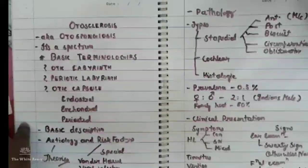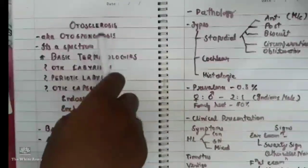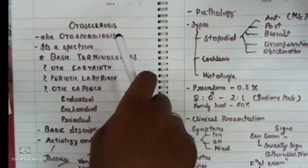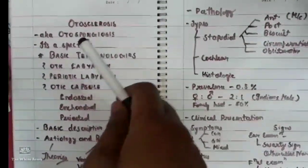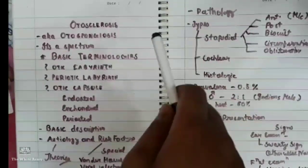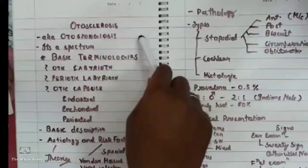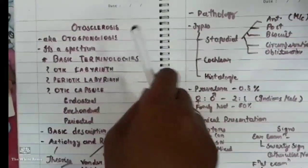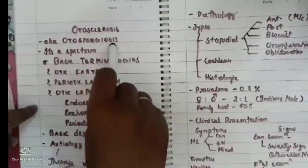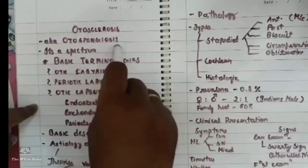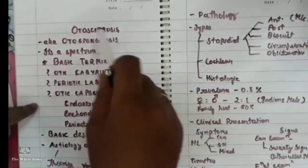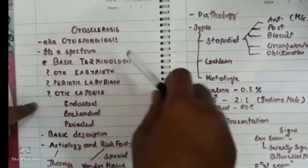Otosclerosis involves abnormal bone formation around the stapedial foot plate. However, this is just one part of the entire spectrum of the disease, which is also known as otospongiosis. We'll discuss why further under the next headings.